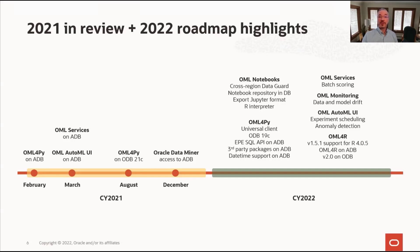Coming soon: OML for Python on-premises for Oracle Database 19c, along with a standalone universal client. On Autonomous Database, embedded Python execution will be supplemented with a SQL API in addition to the existing REST API. OML Notebooks will have their repository in the user's Autonomous Database instance, enabling database-instance-specific backup and restore as well as cross-region Autonomous Data Guard features, which ensure high availability, data protection, and disaster recovery.